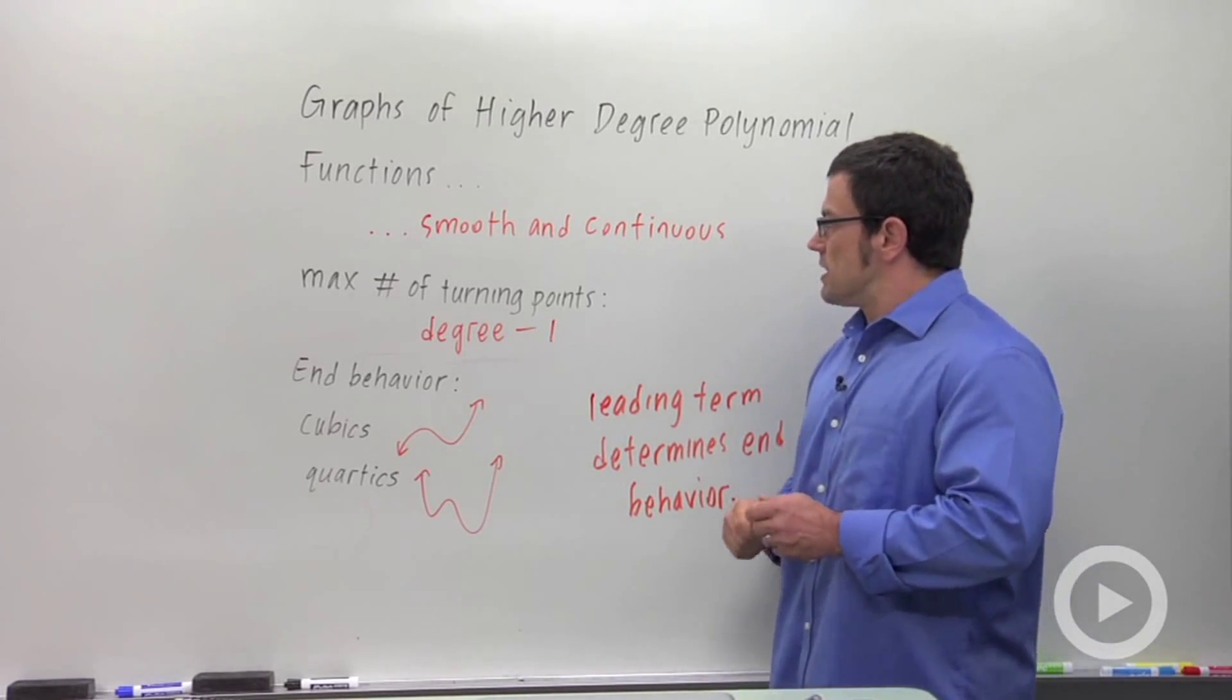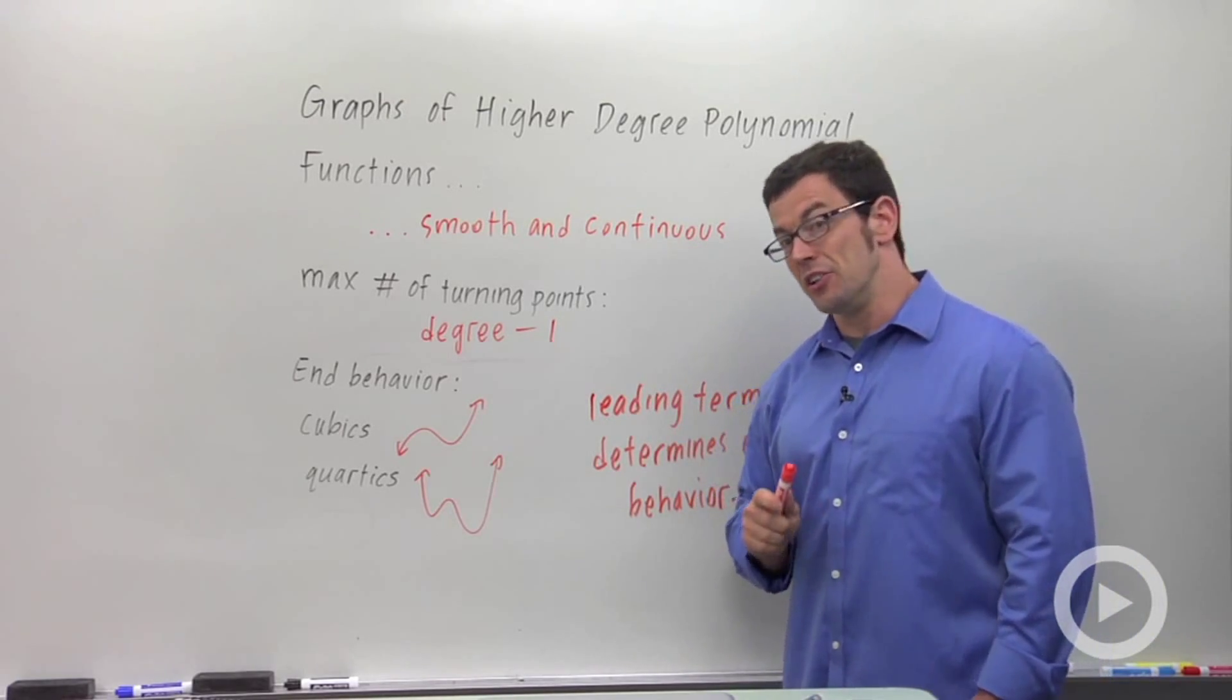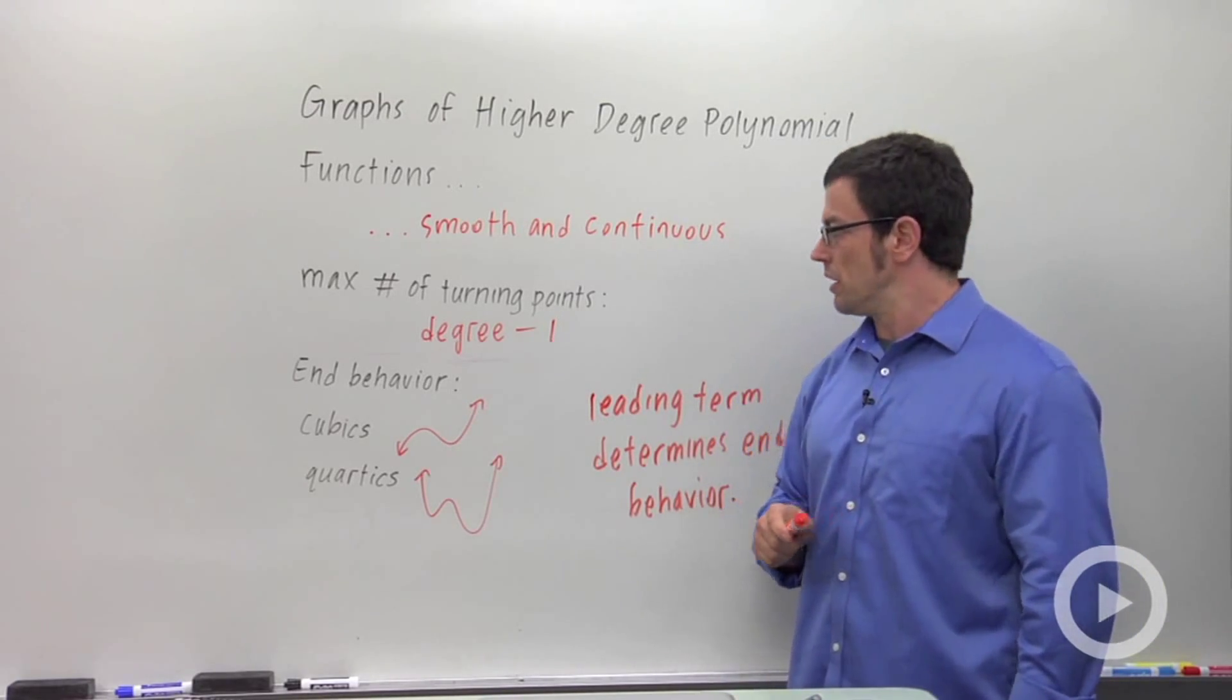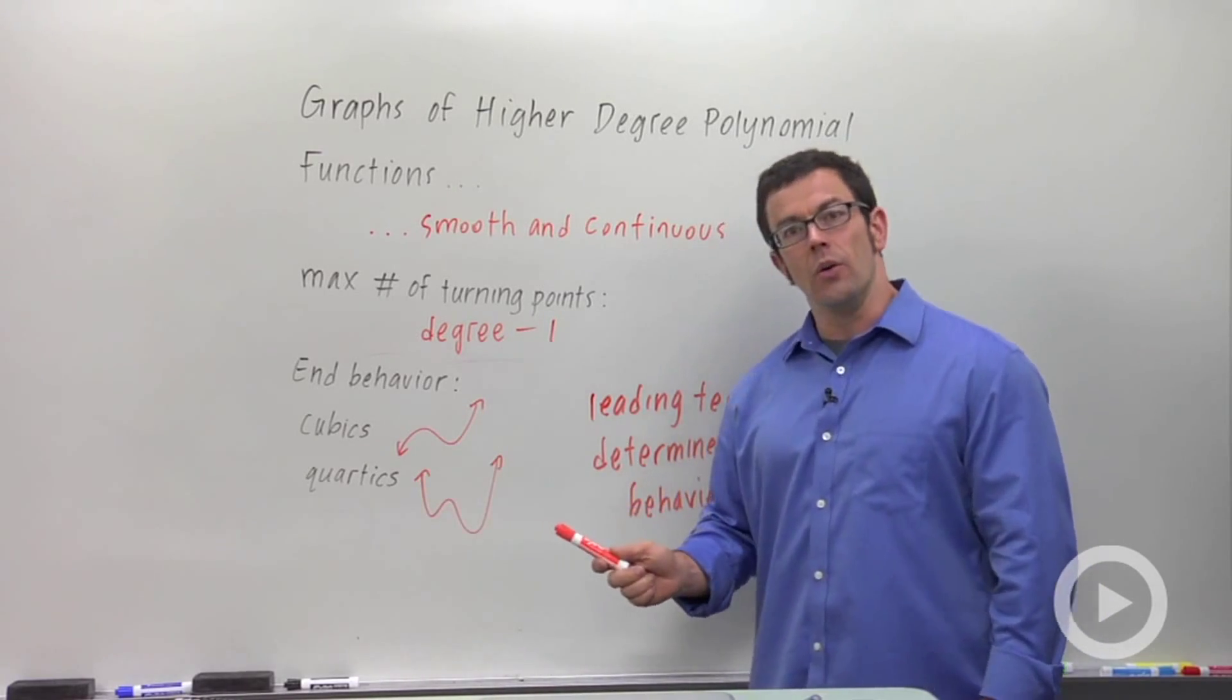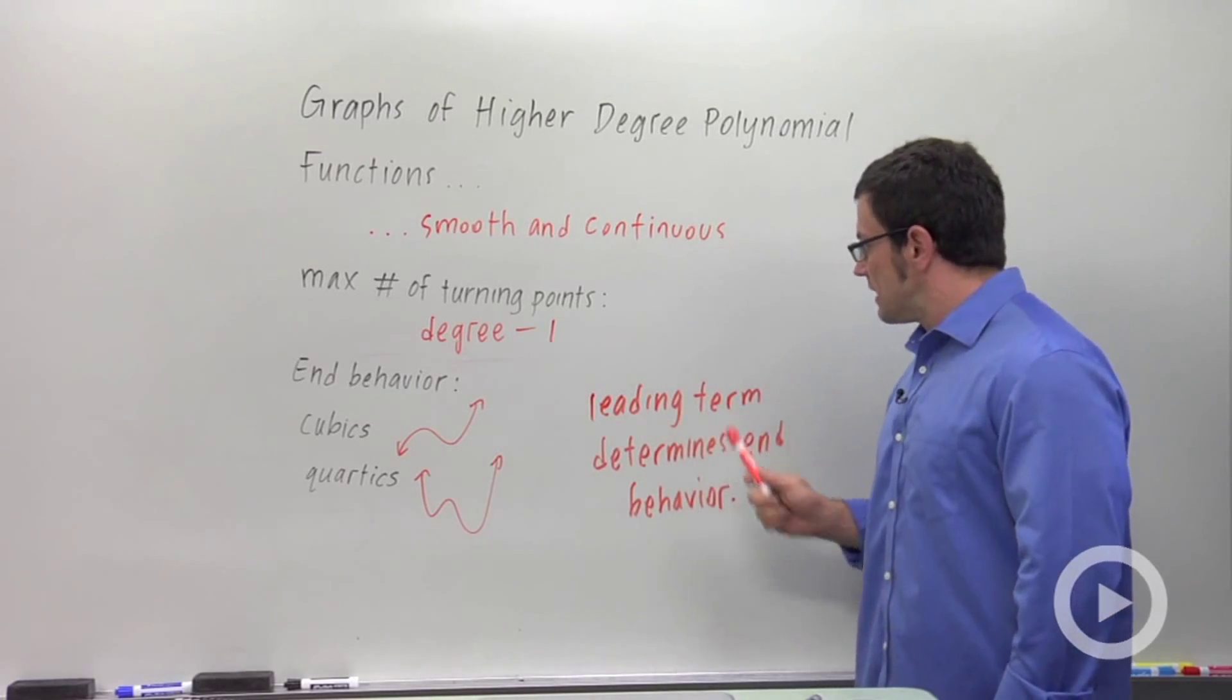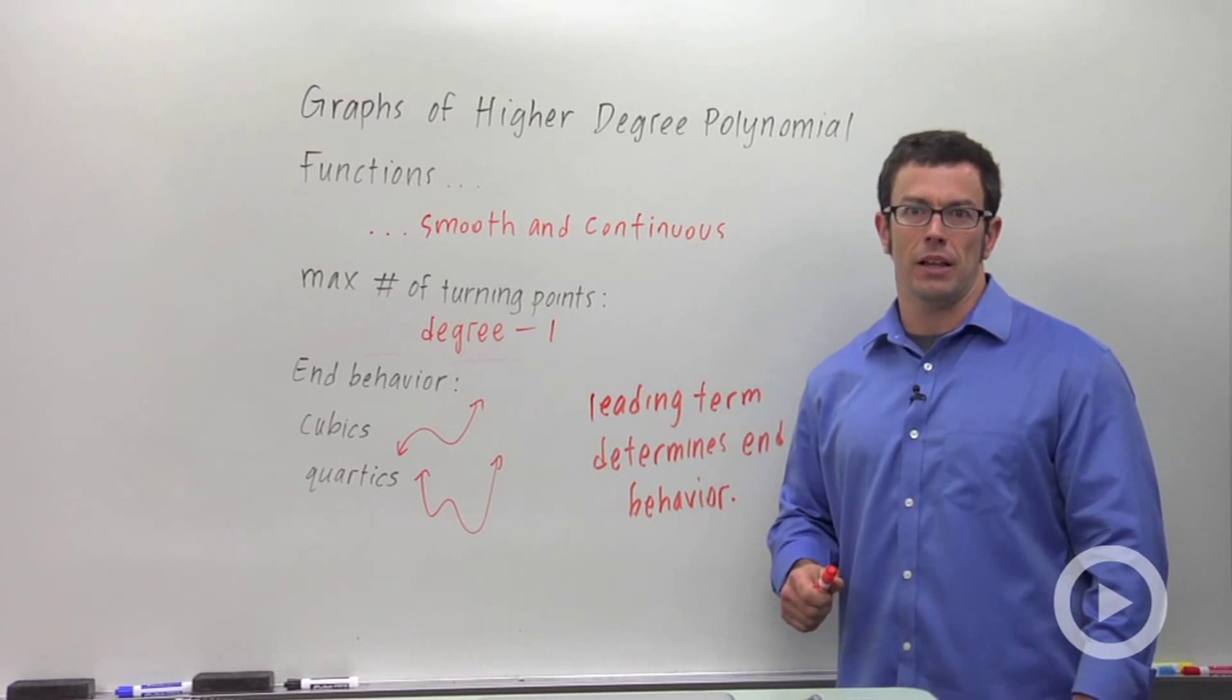So, knowing these things, the graphs are smooth and continuous, the max number of turning points is the degree of the polynomial minus one, remembering that the ends of a cubic go in opposite directions, the ends of a quartic go in the same direction, and that the leading term determines end behavior, that's enough to get us started graphing polynomials.